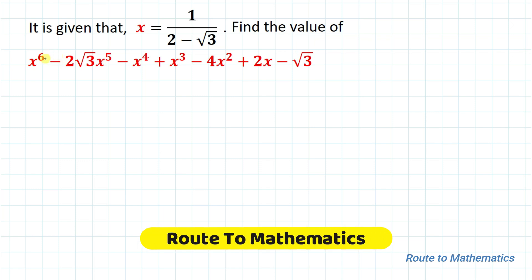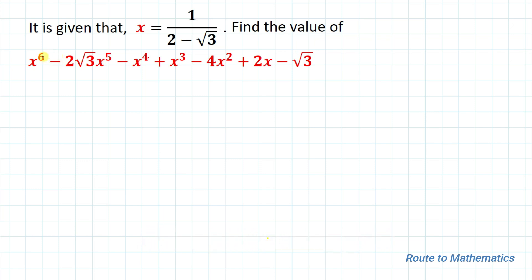Hello everyone, welcome to Root 2 Mathematics. In this video we are going to solve an interesting Olympiad question. The given question is: x equals 1 divided by (2 minus root 3), then find the value of x⁶ minus 2√3·x⁵ minus x⁴ plus x³ minus 4x² plus 2x minus √3.